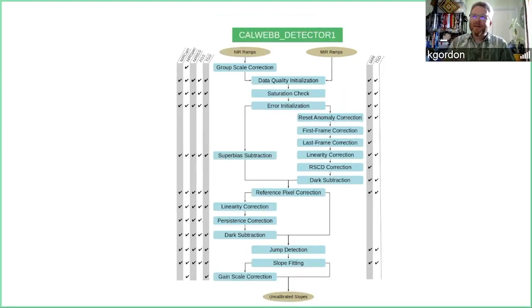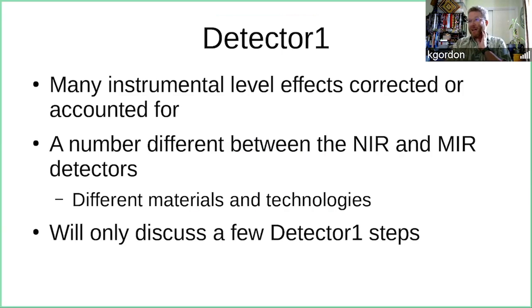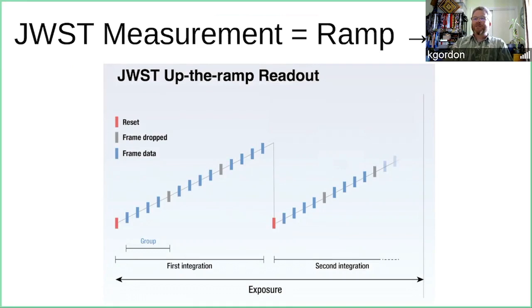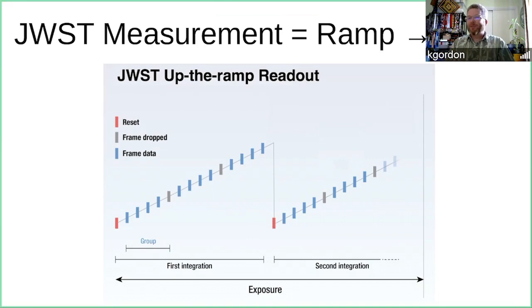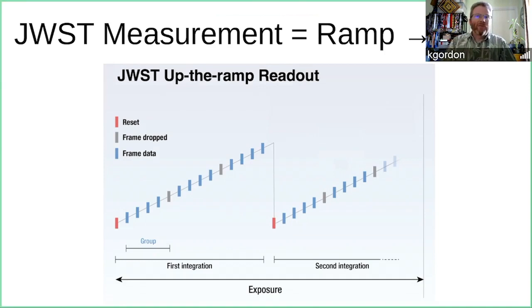Detector one is where many instrumental-level artifacts are corrected. There are a number of differences between near- and mid-infrared detectors since they use different materials and technologies. The basic data coming down from JWST for all instruments and detectors is the ramp. Unlike CCDs, these near- and mid-infrared detectors can sense the number of electrons in a pixel without destroying them, so you can sense it multiple times during an exposure — sampling every group time.